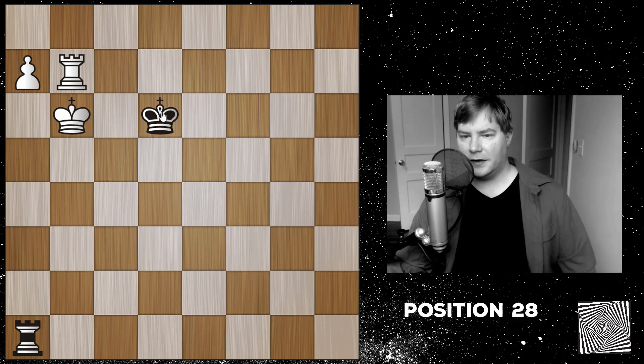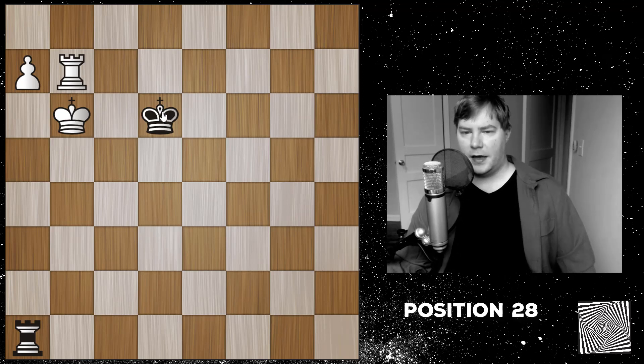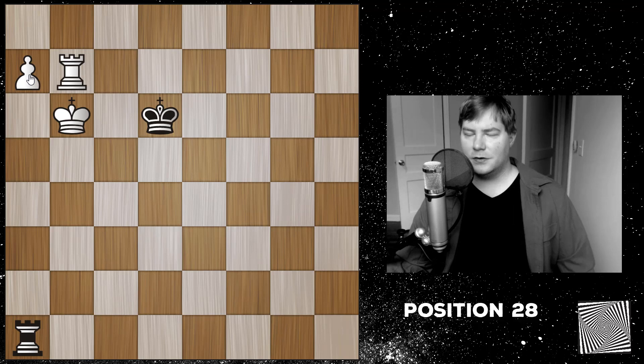If white can keep the black king out and eventually support the pawn, then it'll be a win for white. So just key properties in these endgames to know, and you really don't have to memorize the specific position. You should just know these basic properties, so that when you see them over the board, you'll be able to at least analyze it and figure it out for yourself.